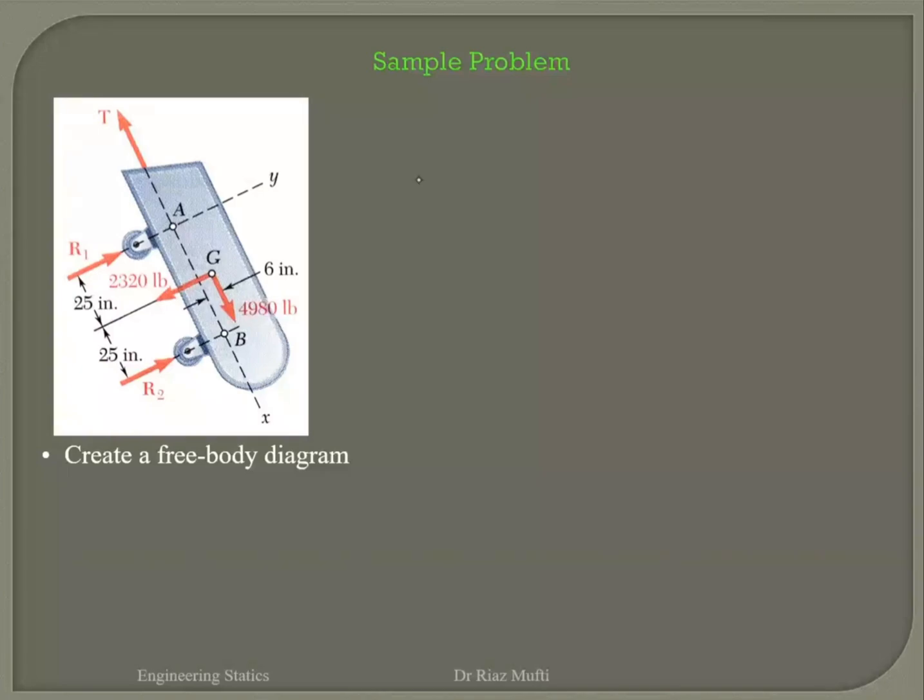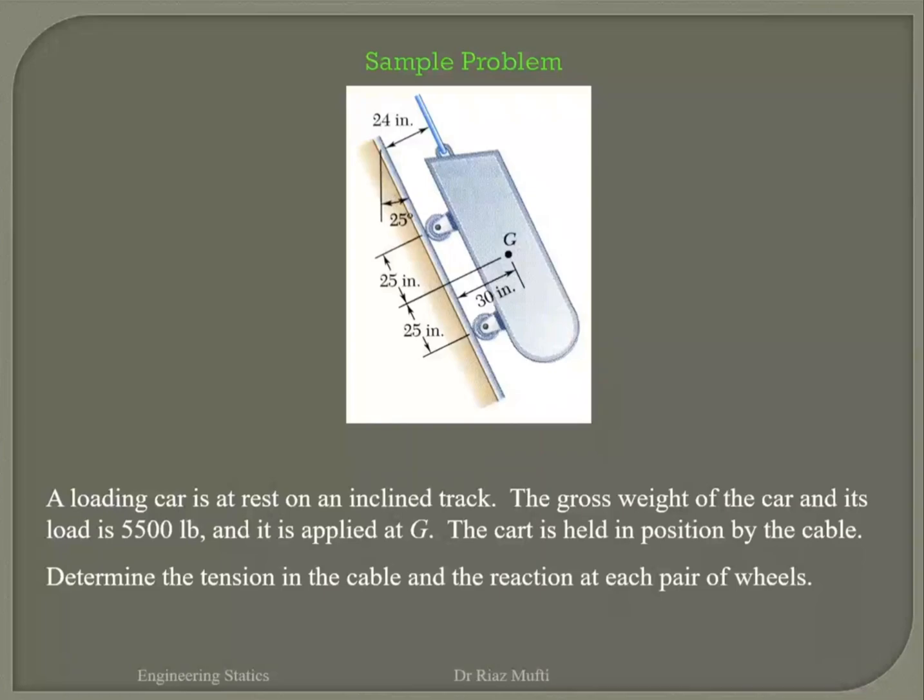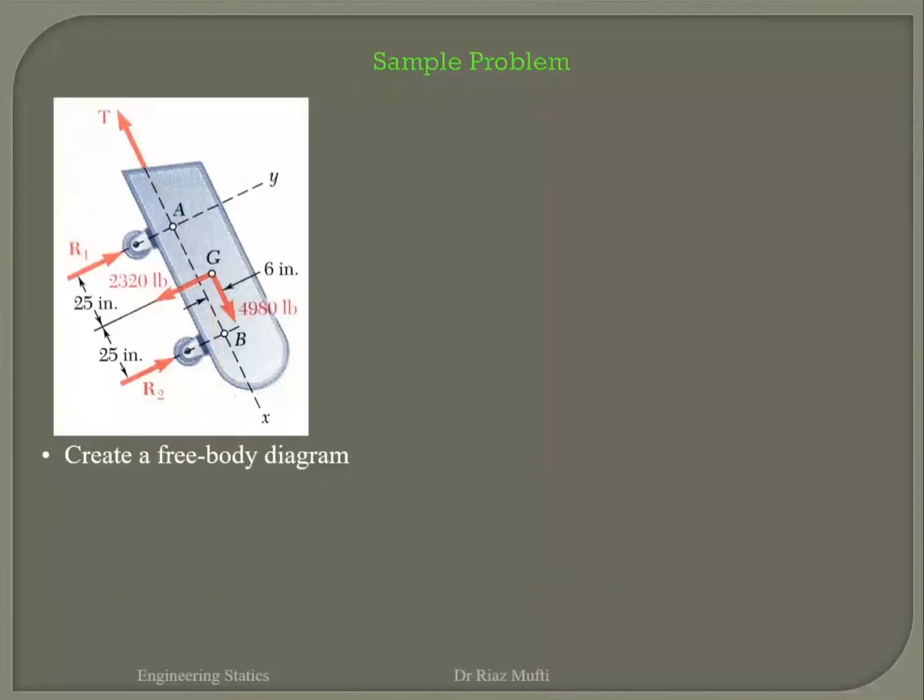So instead of having G downward, because knowing the angles - the angle is given, just a second - yes angle is given 25 degrees. So it's been split into two components. Now a bit of common sense has been used here.